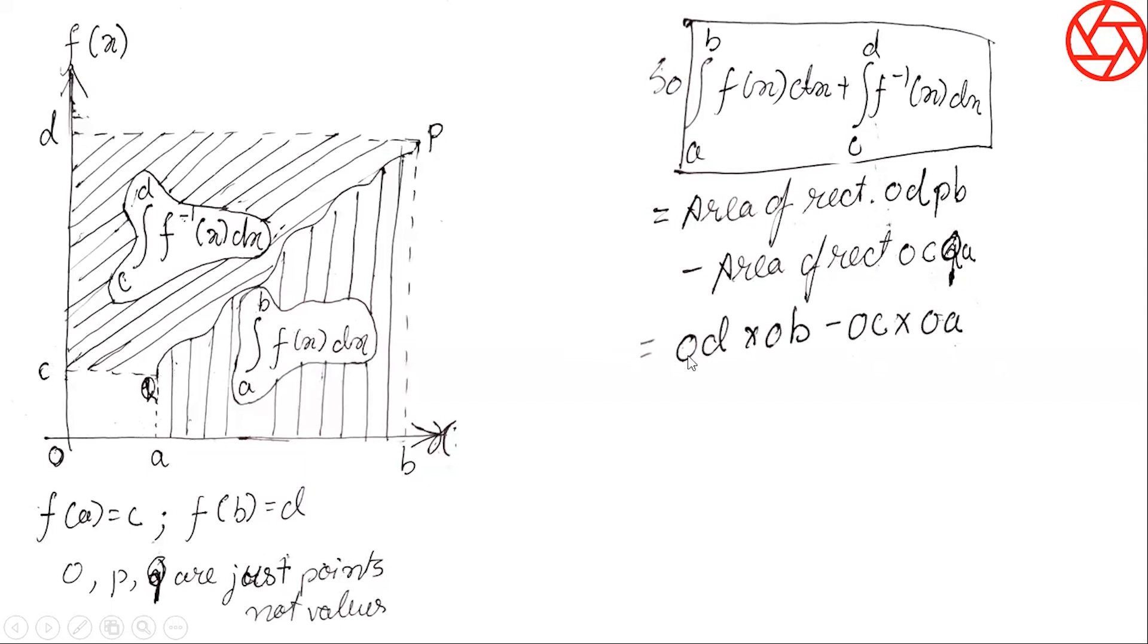This shape is the larger rectangle from where the smaller rectangle has been removed. The larger rectangle is O D P B and the smaller rectangle is O C Q A. So how can we find the sum of these two? Through the area of rectangle O D P B minus the area of rectangle O C Q A. The area of a rectangle can be calculated by the product of the lengths of two adjacent sides. As I said before, I would be taking A, B, C, D as values as well as points. Let's take O as 0. This length is B and this length is D. Similarly, this length is A and this length is C.